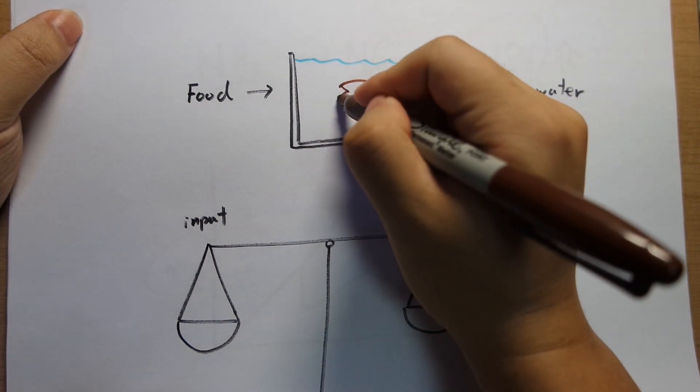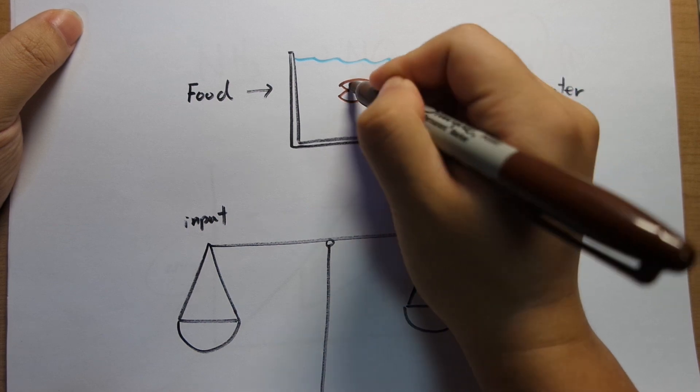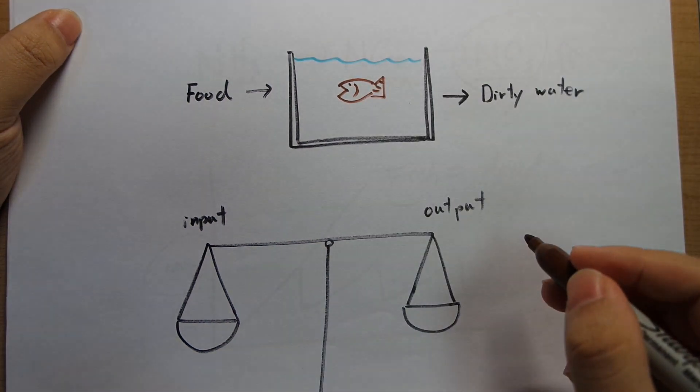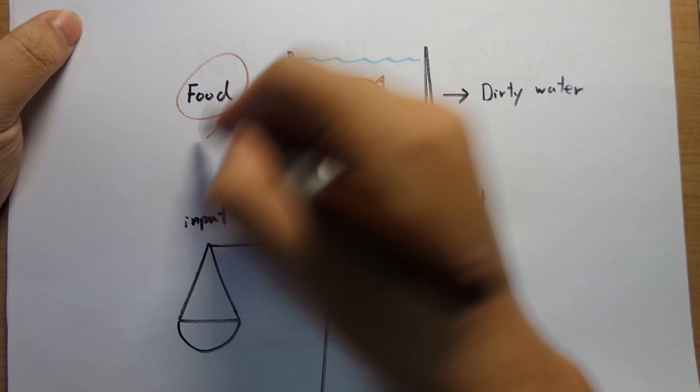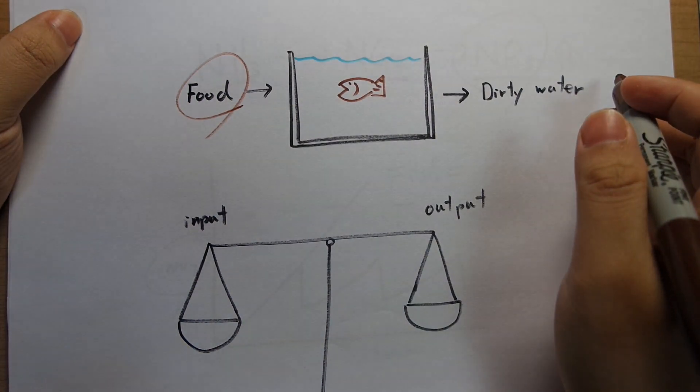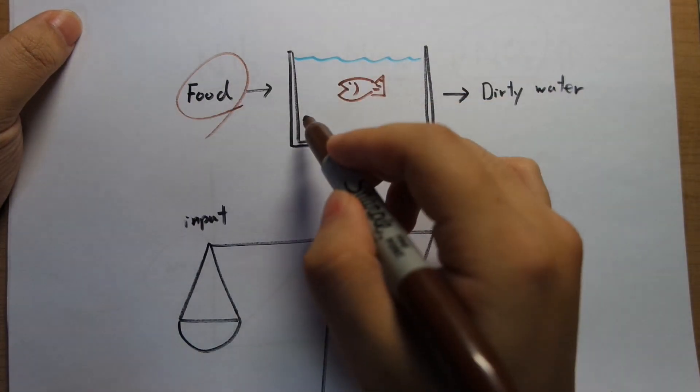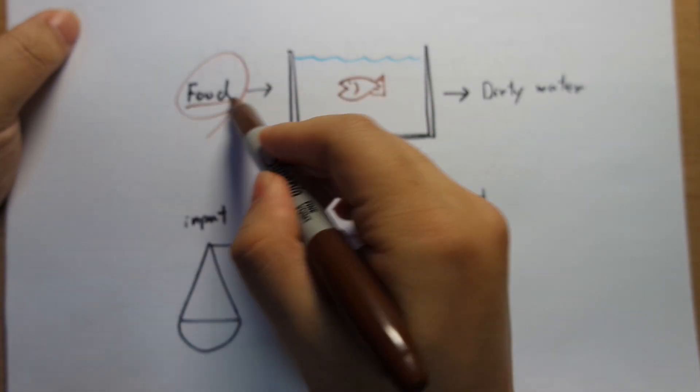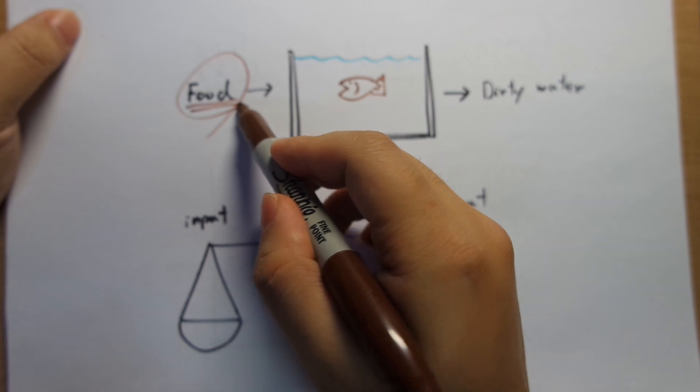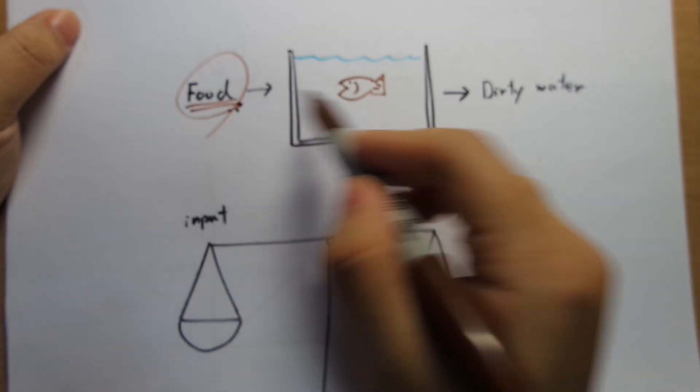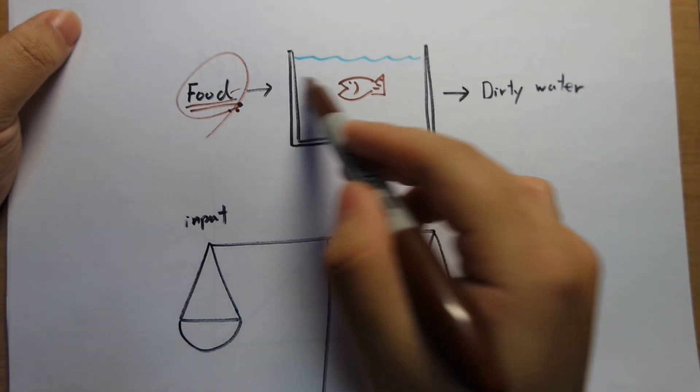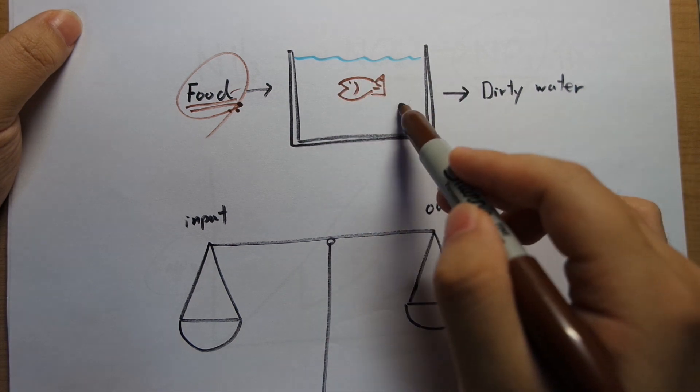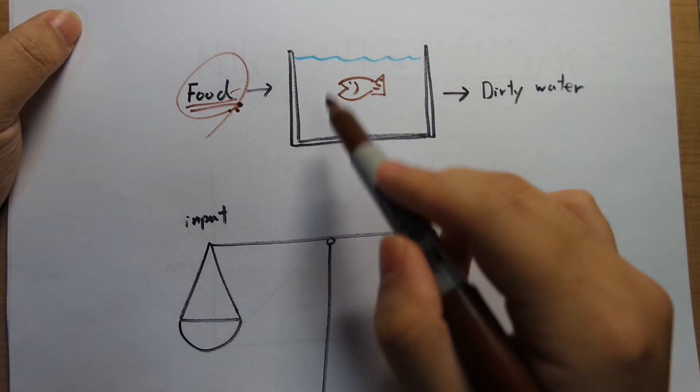So this is your tank. You got your fish in here. As I've said in my filtration basics video, the food is your source of pollution. This is what's going in. Basically the food that you're putting into the tank is the source of pollution for this tank. Because that food is going in, you need something coming out to balance out the tank.